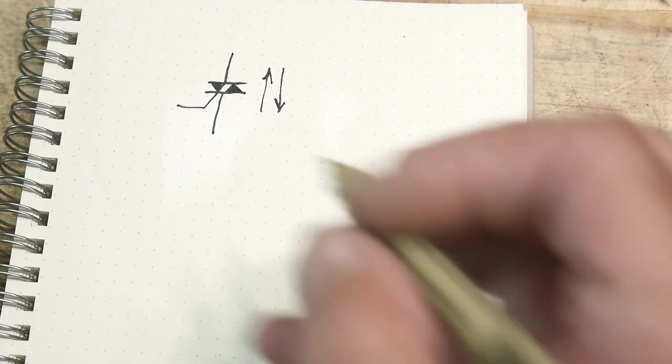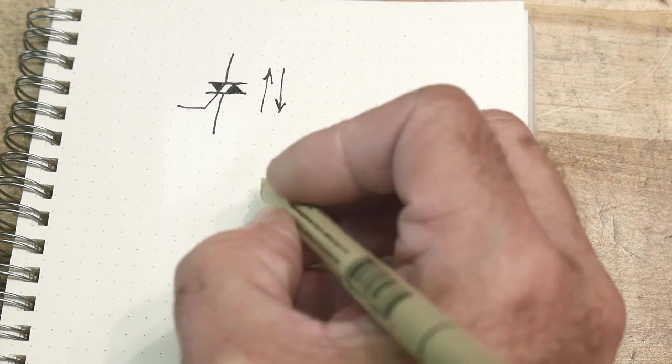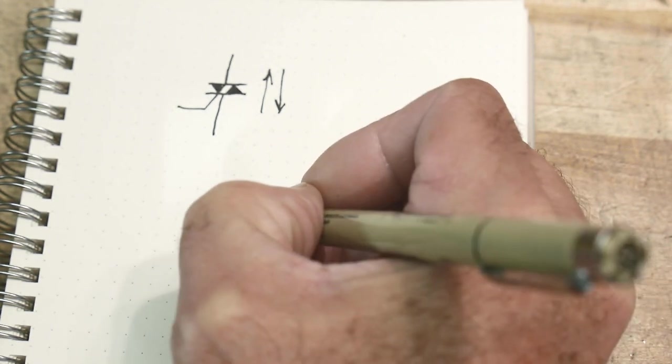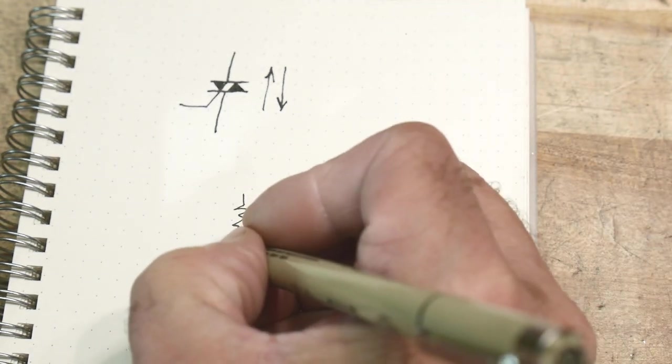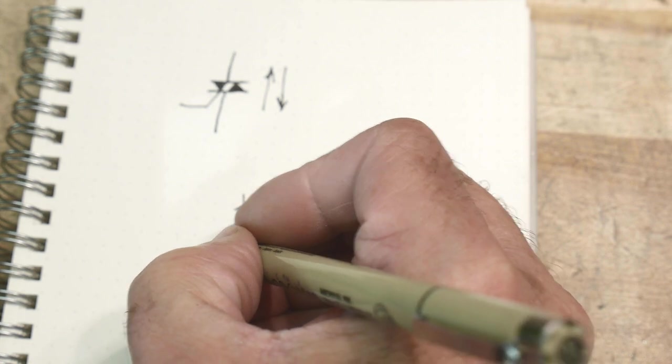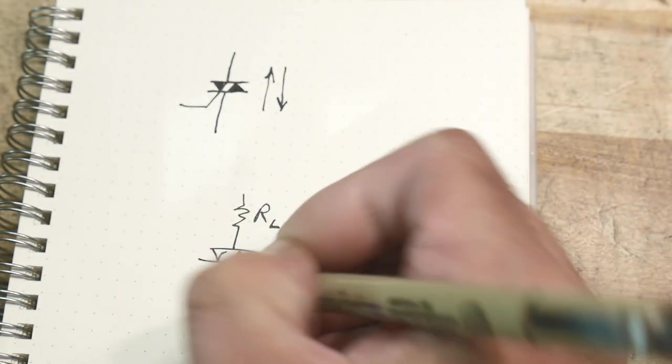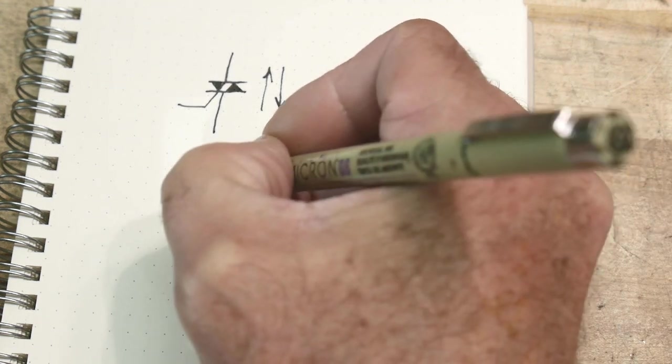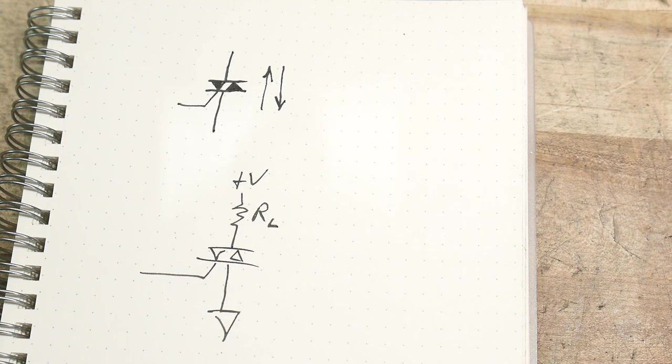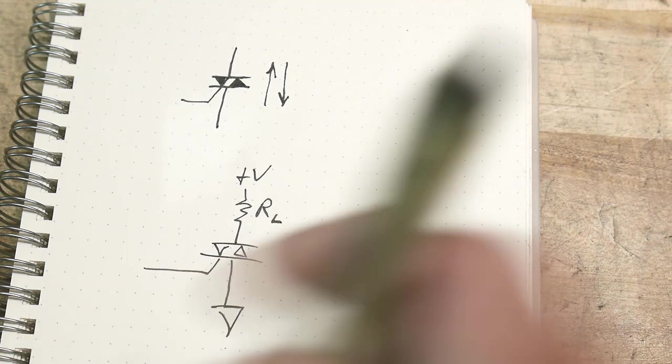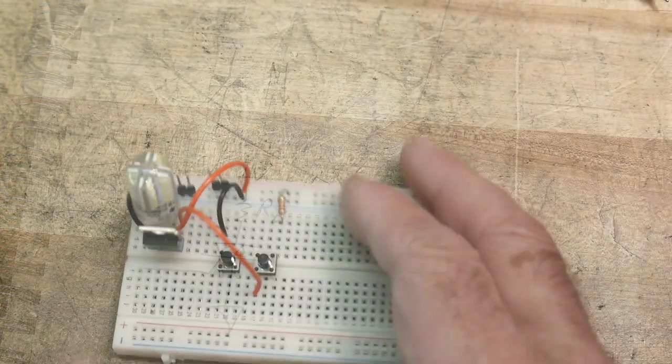So how do you use a triac? Well, you can have a load. Okay. So let's say we have some load and we're going to put our device on a load and then we'll turn it on and off. Okay. So let's wire that up. Let's see how this thing works.